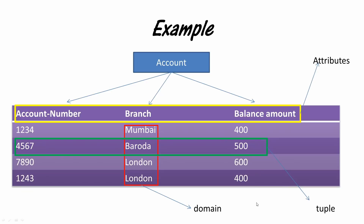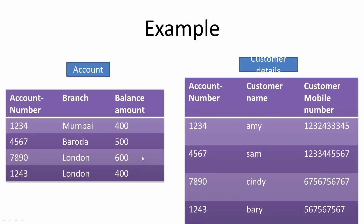Now let's look at an example of how the relational data model works. In relational data model, you have connections between different tables to get data or do processing on the database. Say we have two tables: account and customer details. A table in relational data model is also called a relation. The column account number is common in both tables, and this common column is called a key.